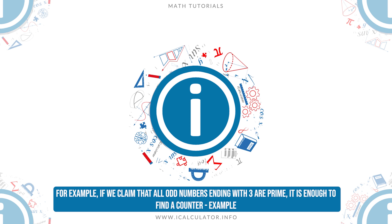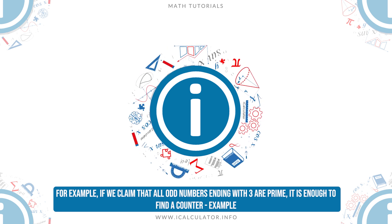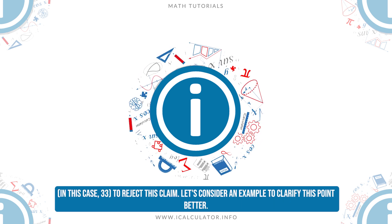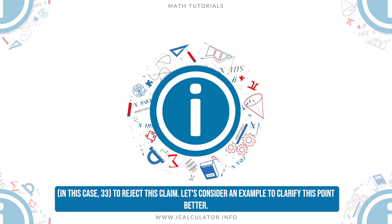For example, if we claim that all odd numbers ending with 3 are prime, it is enough to find a counter-example, in this case 33, to reject this claim.